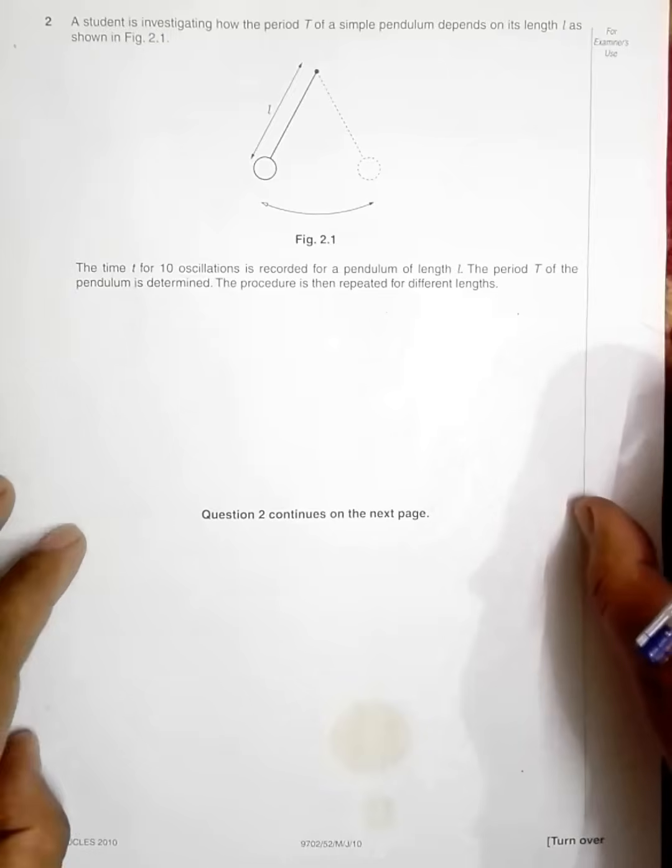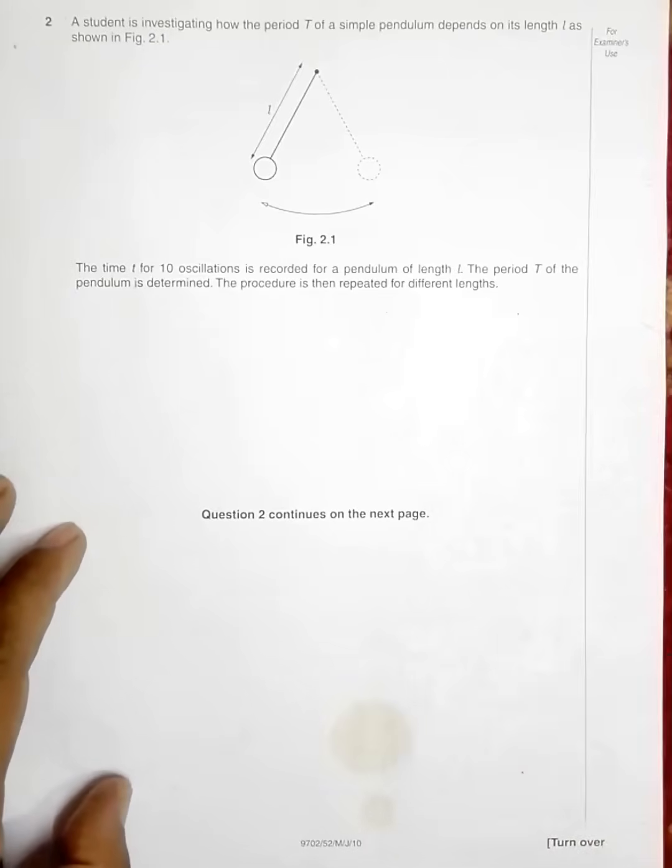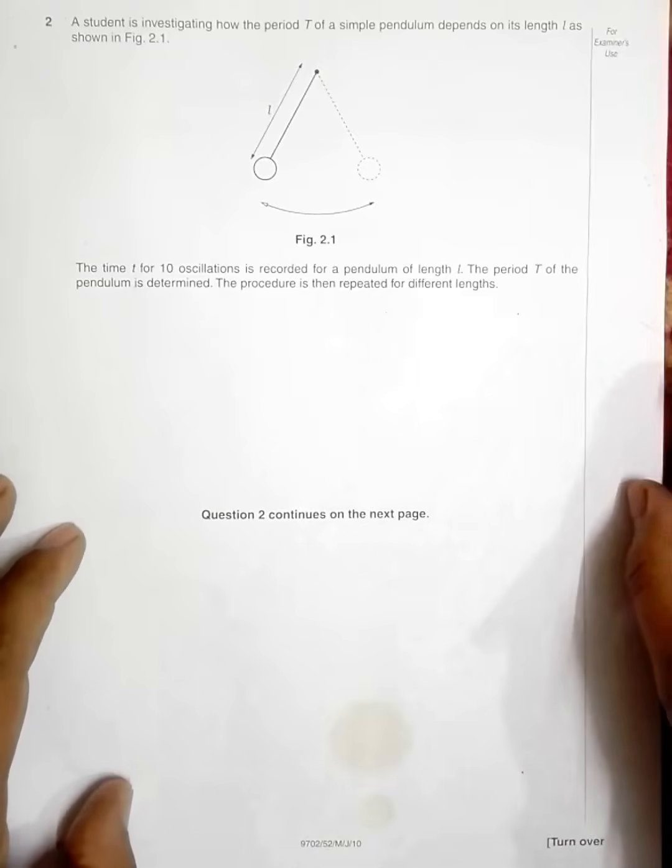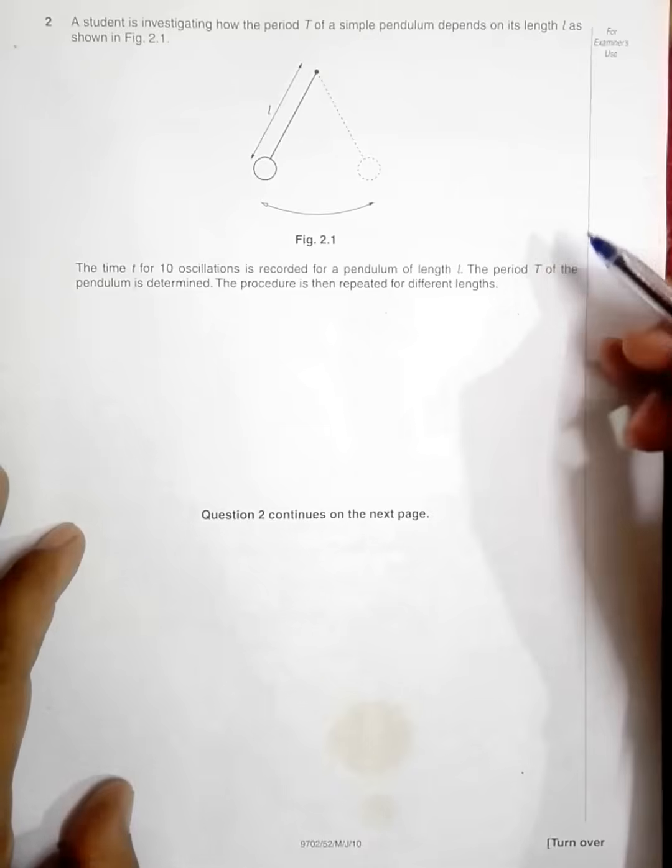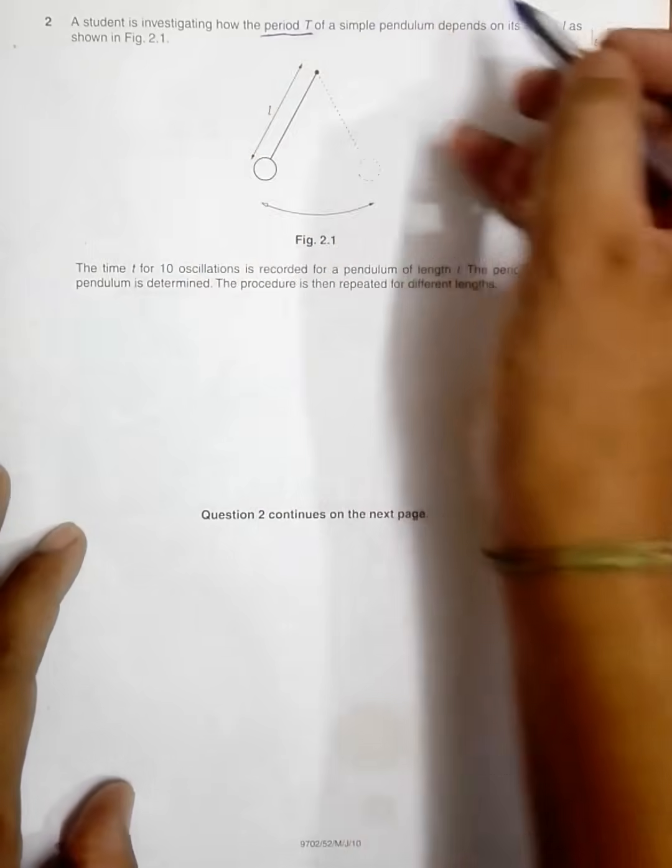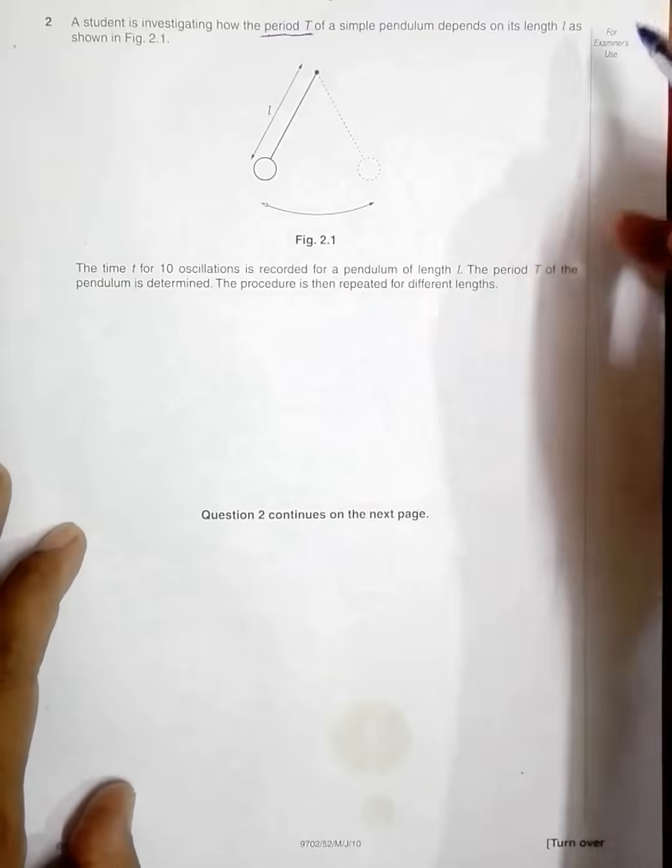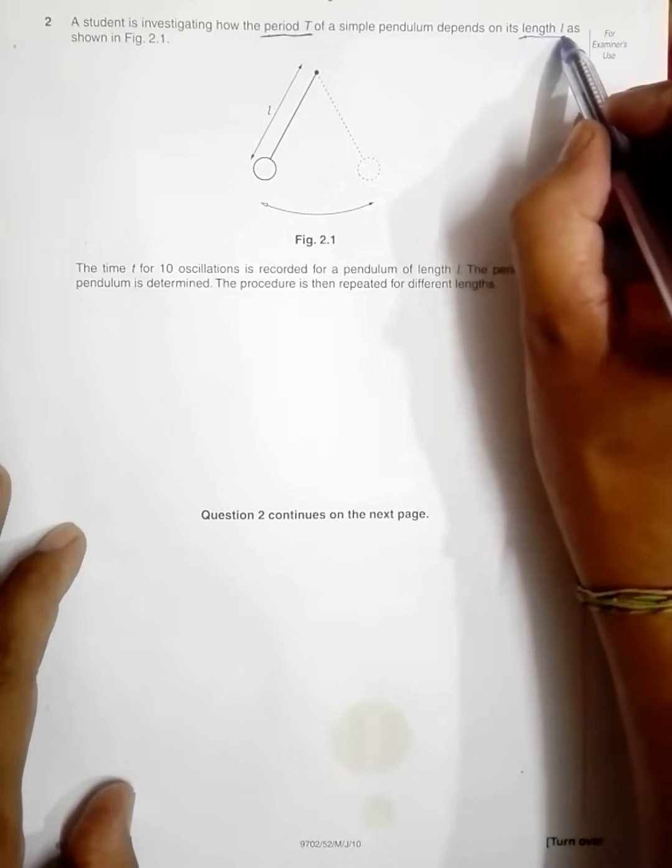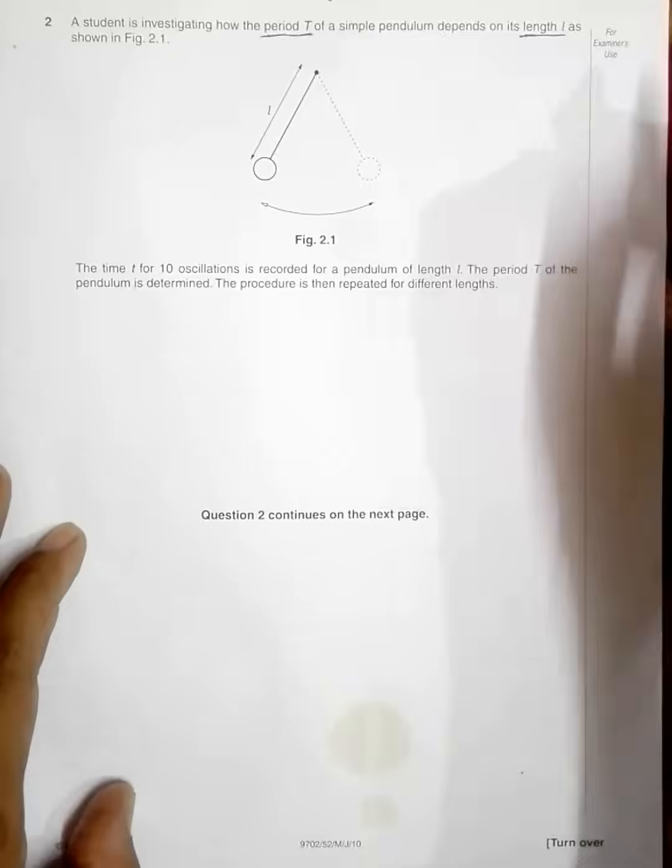My first question starts from 2010 May/June Paper 5 and it is question number 2. It says that a student is investigating how the period T of a simple pendulum depends on its length L as shown in Figure 2.1.